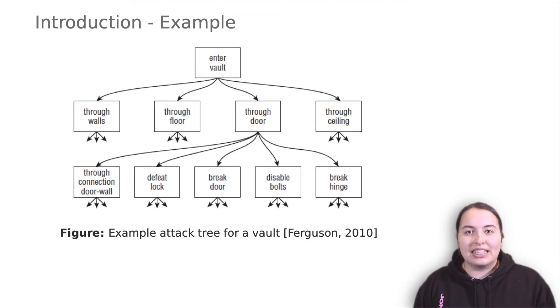We could continue by discussing individual lines of attack on the lock, one of which is to acquire a key which in turn leads to a whole tree about stealing the key in some way.